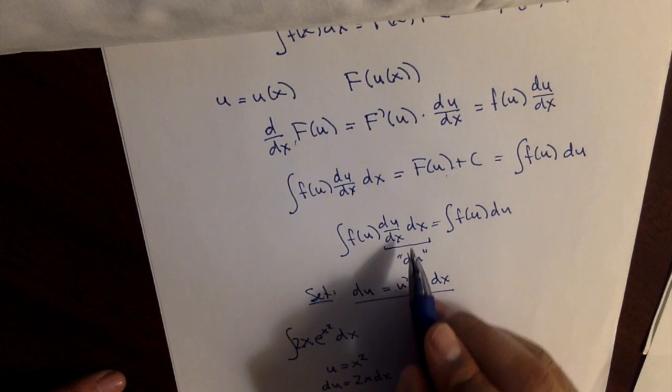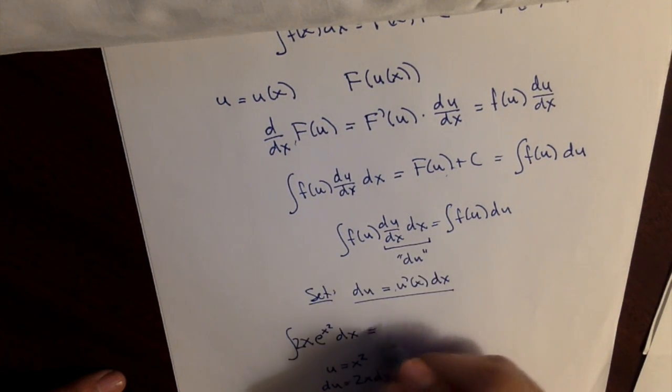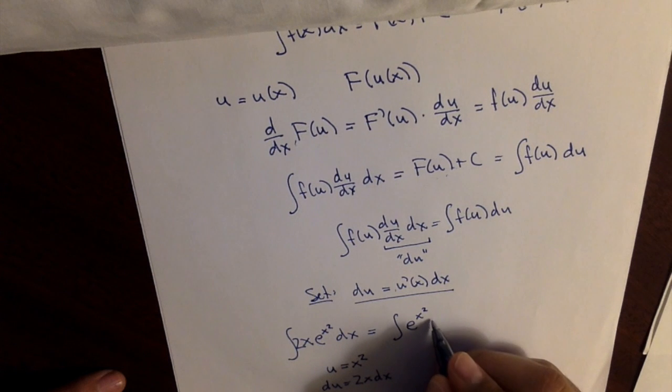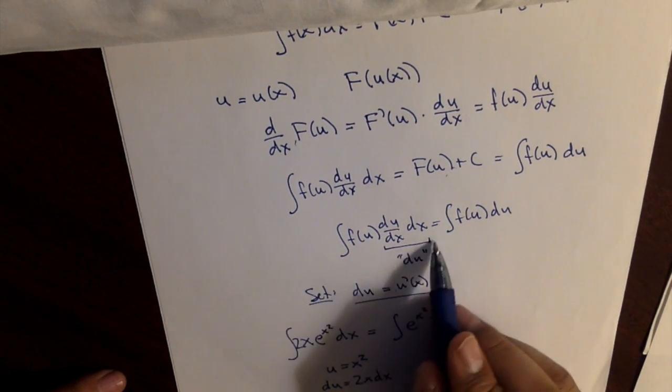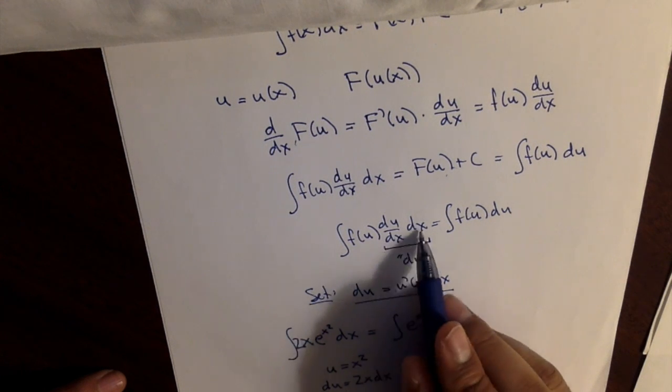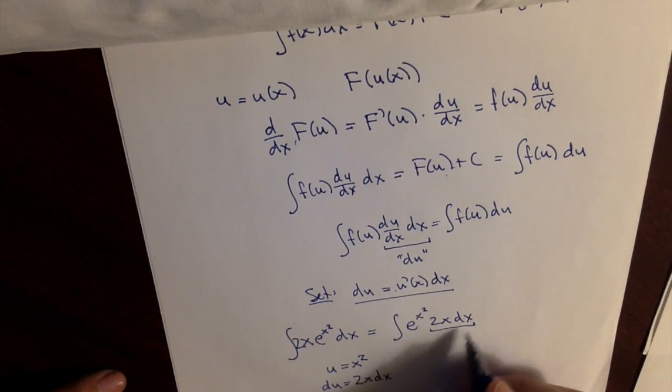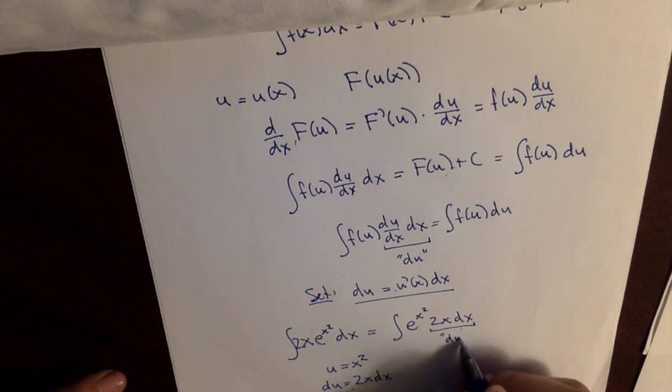And then what it says is that if I have, let me just rewrite this a little bit, as e to the x squared times 2x dx. And this thing says that if I find an expression that looks like du dx dx, namely this guy right there, that looks like my du, I should call that thing du.